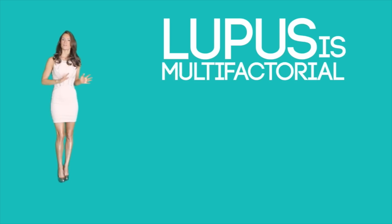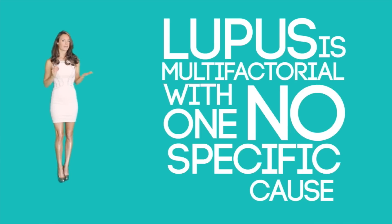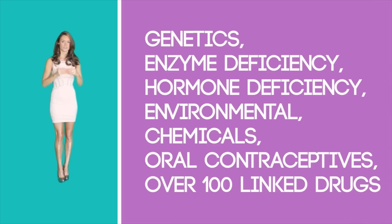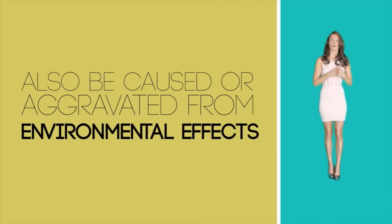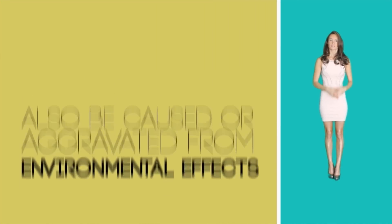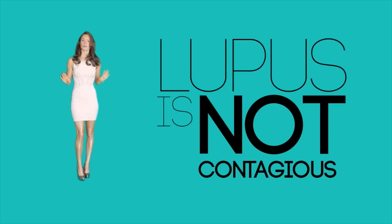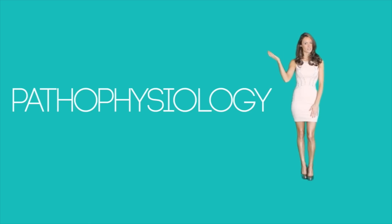Eighteen of those patients died within two years, which led to the start of research into the disorder. Lupus is multifactorial with no one specific cause — it can be a combination of genetics, enzyme deficiency, hormone deficiency, environmental chemicals, oral contraceptives, and over a hundred linked drugs. It may also be caused or aggravated by sunlight, ultraviolet light, infections, the Epstein-Barr virus, HCV, smoking, or even pregnancy. Lupus is not contagious and is not spread from one person to another.